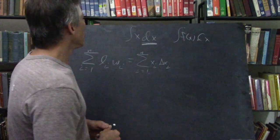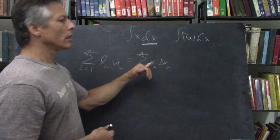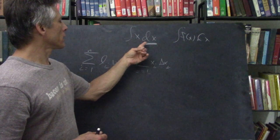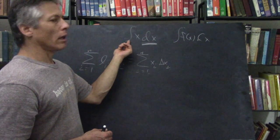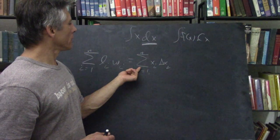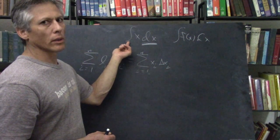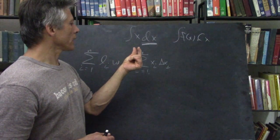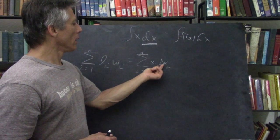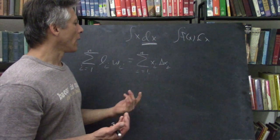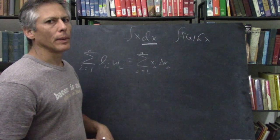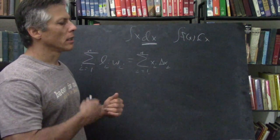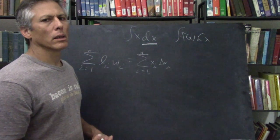Remember the integral is the limit of a sum. This is a sum as you go to the limit, so this is a differential — dx, delta x — it's a really small one. This delta x could be 5, it could be 1000, it could be 0.01, but dx is delta x gone to close to zero.